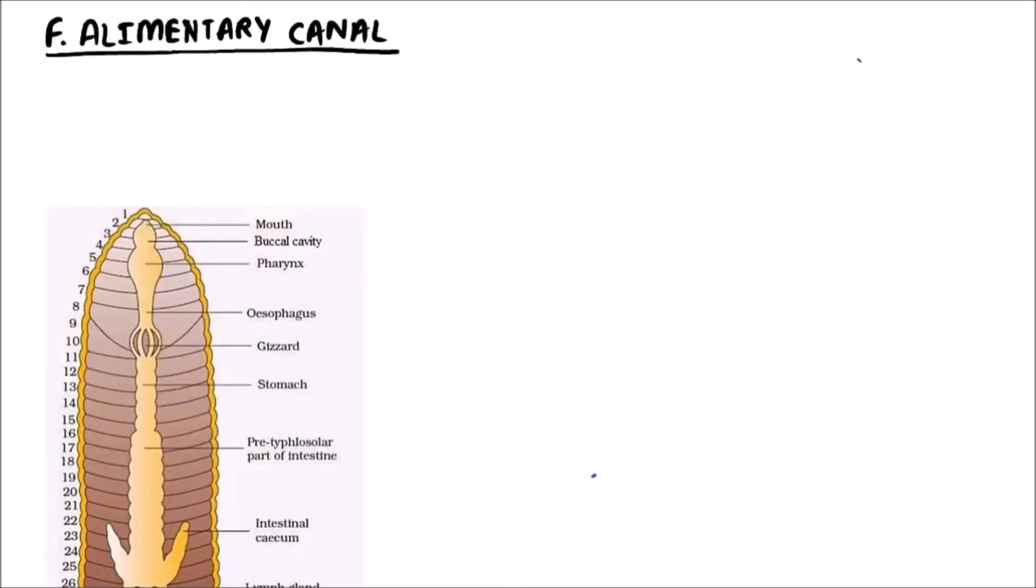Welcome to Studio Biology. In this video we are going to discuss the alimentary canal or gut of earthworm. The alimentary canal of earthworm is straight with separate mouth and anus, that is a tube within tube body plan.